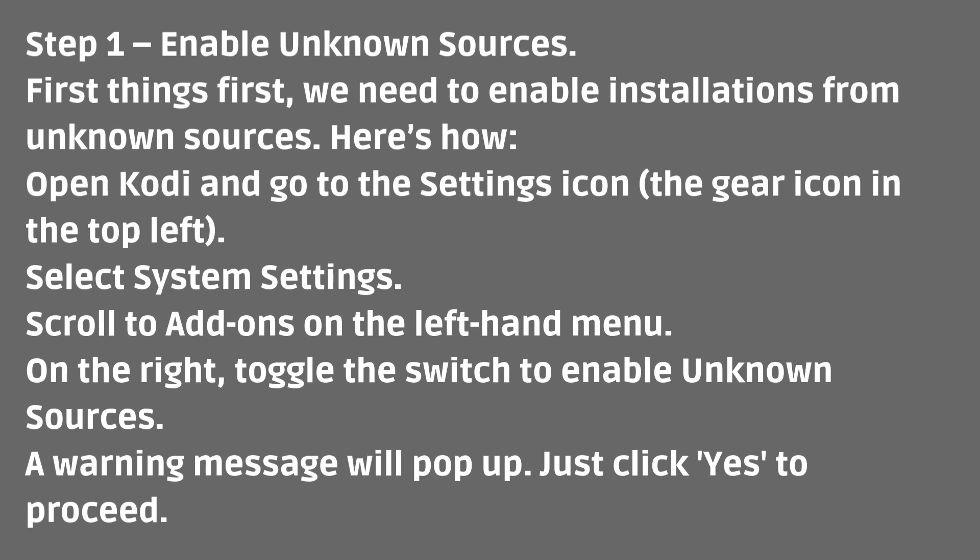Step 1: Enable unknown sources. First things first, we need to enable installations from unknown sources. Here's how. Open Kodi and go to the settings icon — the gear icon in the top left. Select system settings. Scroll to add-ons on the left-hand menu. On the right, toggle the switch to enable unknown sources. A warning message will pop up — just click yes to proceed.